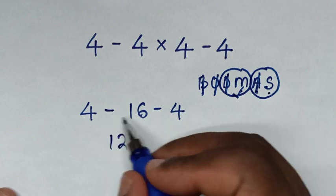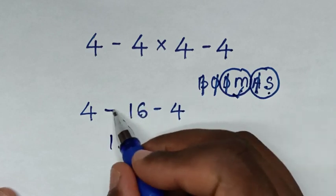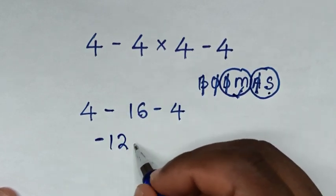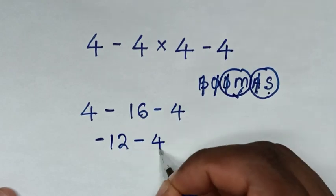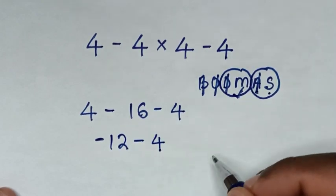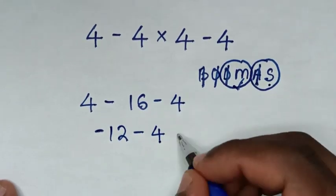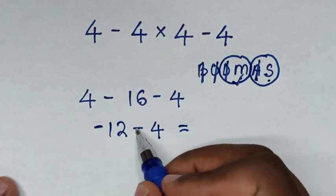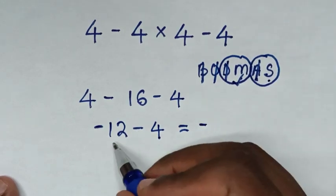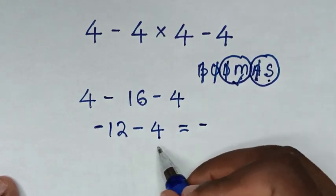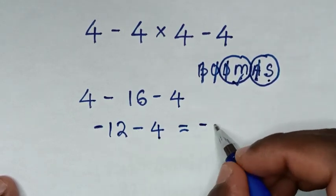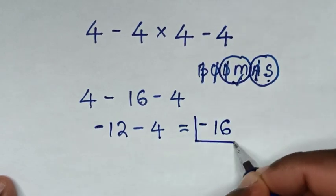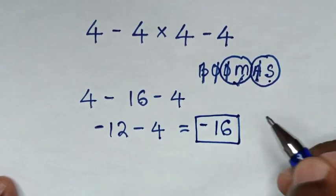But since it is 16, it is negative 16. So here it will be negative 12, then minus this 4. Then it will be equal to negative 12 plus negative 4, which is negative 16. Therefore this is our final answer.